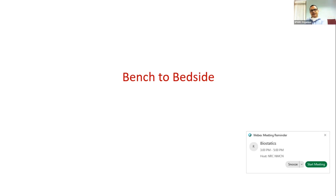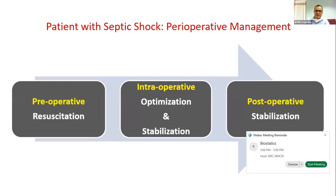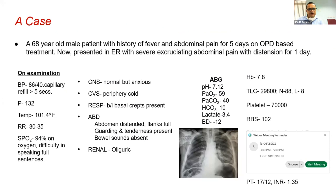The second part of this talk is bench to bedside — correlating theory and definitions with day-to-day clinical practice as a PG student going into further training or clinical practice. Encountering a patient with sepsis while giving anesthesia is not uncommon. Good outcome is defined by timely preoperative resuscitation, continued intraoperative optimization and stabilization, and postoperative stabilization — a continuous effort throughout the perioperative phase.